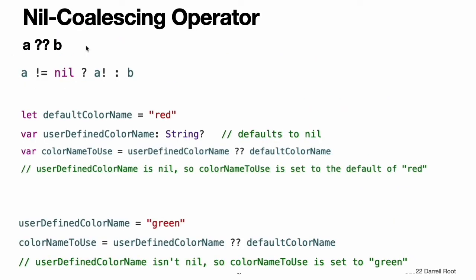The nil coalescing operator, a ?? b, unwraps an optional a if it contains a value, or returns a default value of b if a is nil. The expression a is always of an optional type. The expression b must match the type that is stored inside a. The nil coalescing operator is shorthand for the ternary conditional operator using forced unwrapping: it accesses the value wrapped inside a when a is not nil, and returns b otherwise. Note: if the value of a is non-nil, the value of b is not evaluated. This is known as short-circuit evaluation.